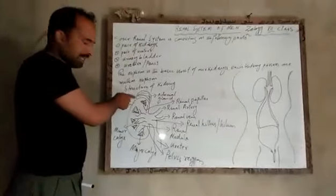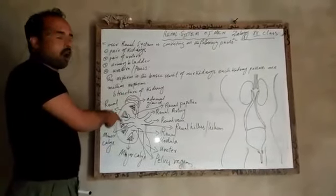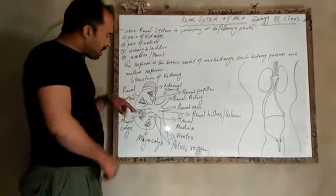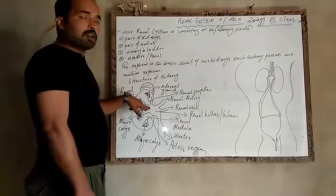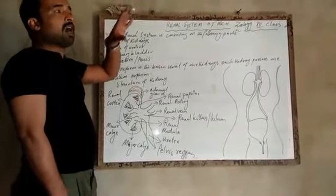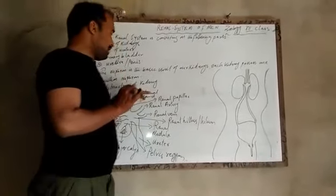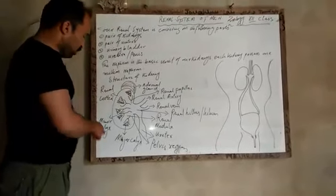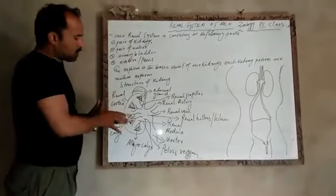This is the structure of the kidney — the internal anatomy. The outer part of the kidney is called the renal cortex. The inner part of the kidney is called the renal medulla. The apex part of the kidney is covered with a gland called the adrenal gland. You can see this in the diagram.